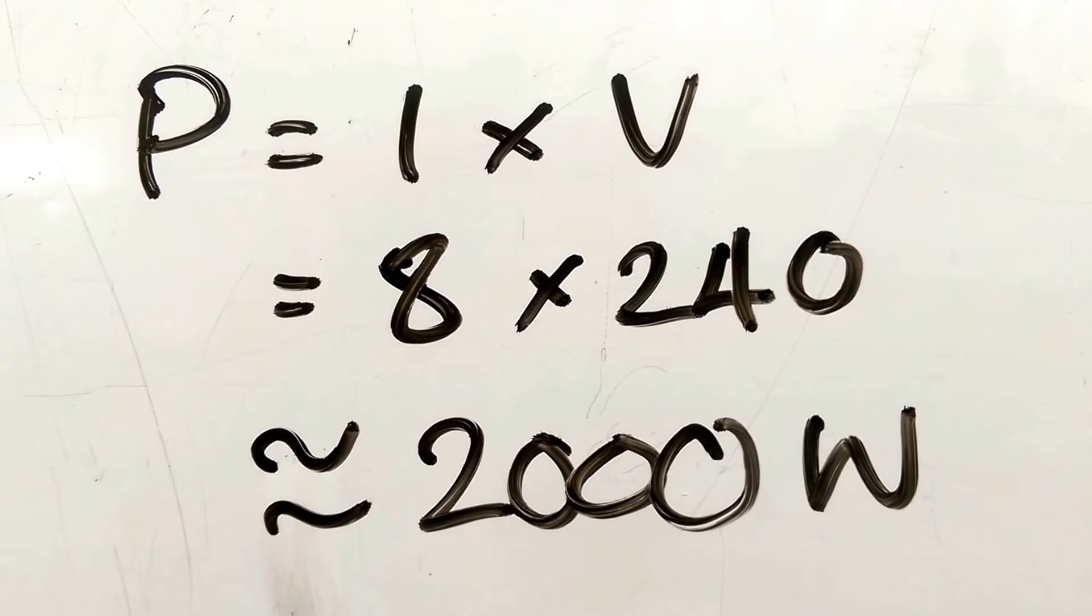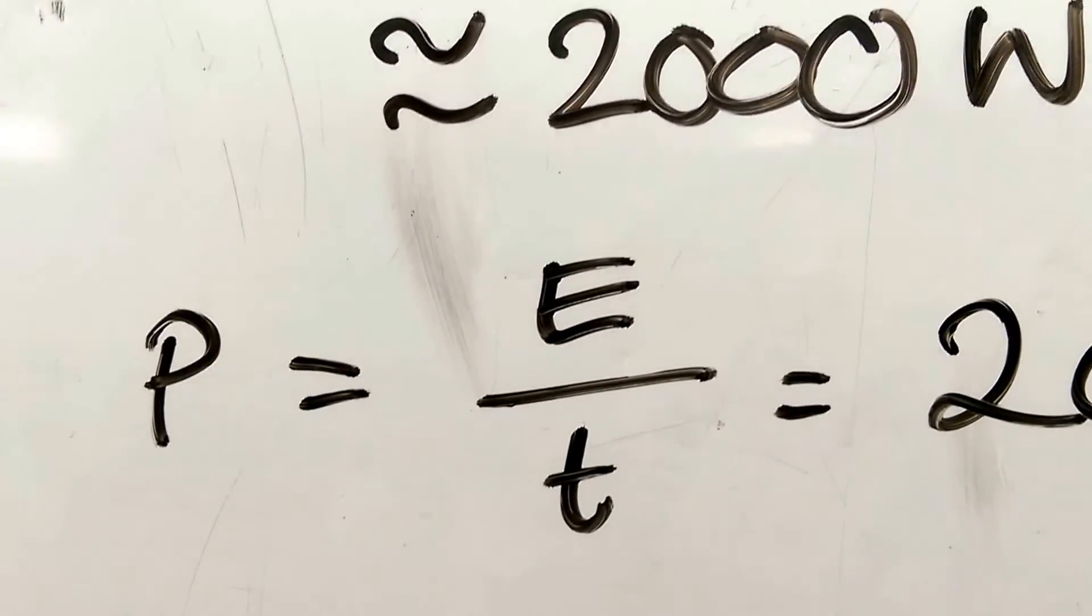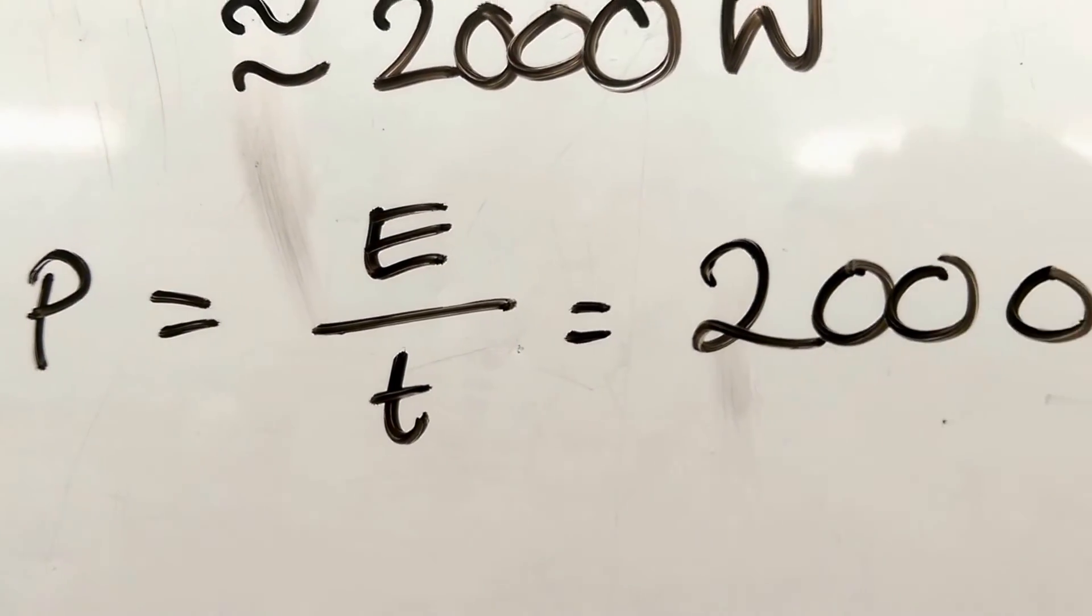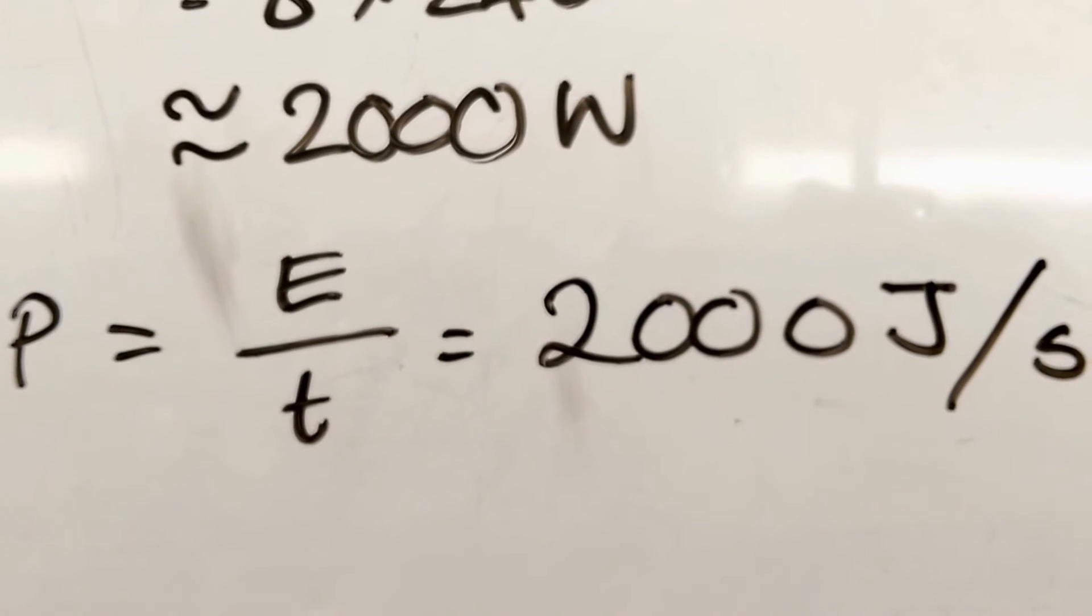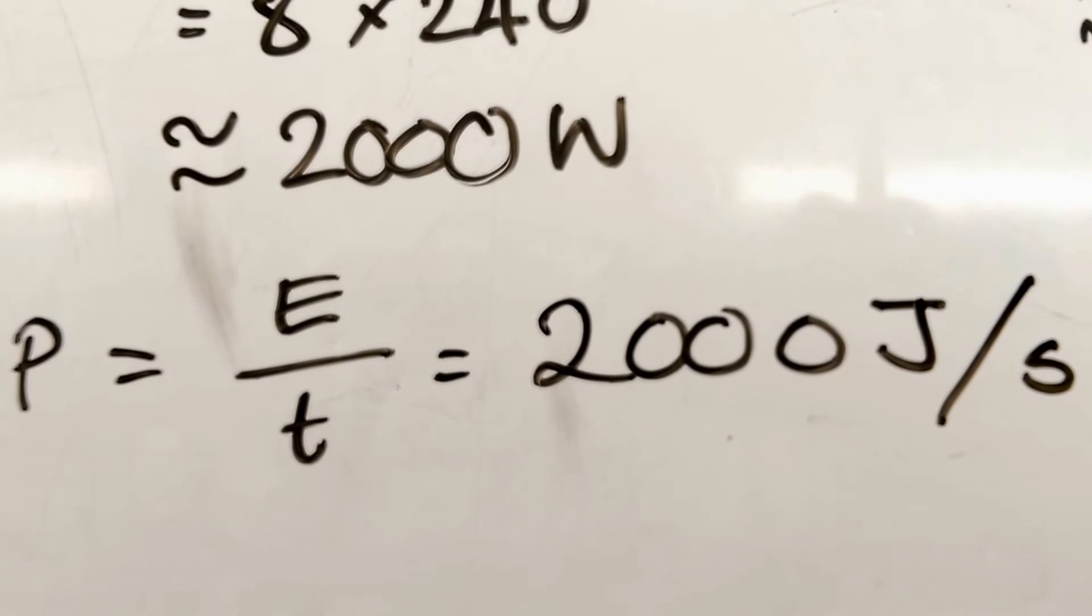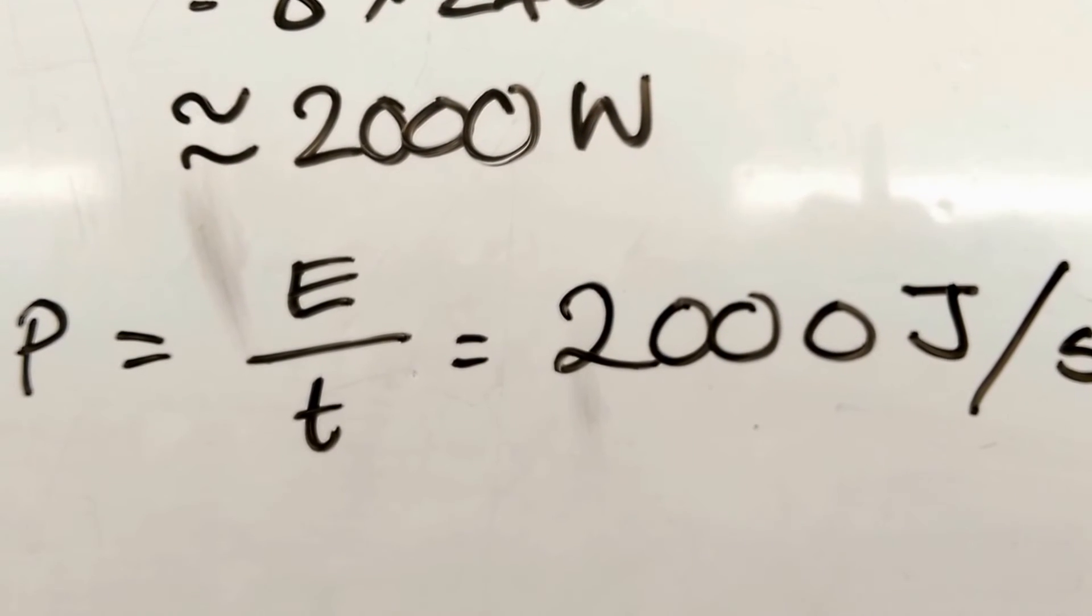Approximately 2,000 watts, 2 kilowatts. That means power is energy divided by time. That means it uses 2,000 joules per second. 2,000 divided by 1 second, 2,000 joules per second.